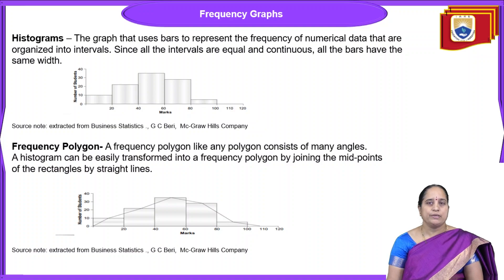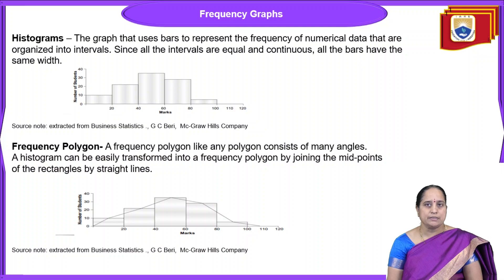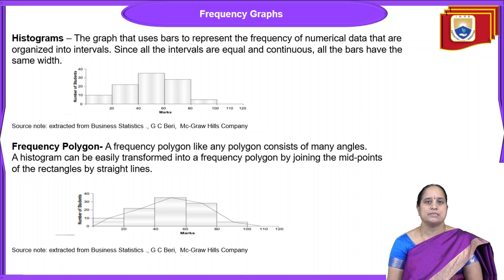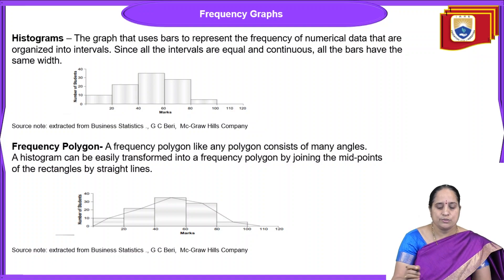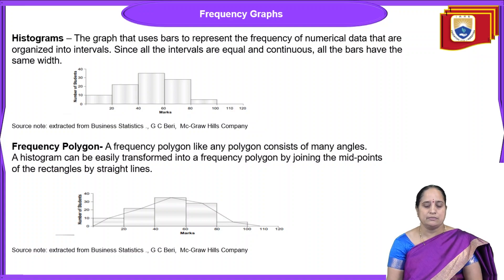The next types of graphs are frequency graphs, under which we have histograms, frequency polygons and frequency curves. A histogram uses bars to represent the frequency of numerical data organized into intervals such as 0–20, 20–40, 40–60, 60–80 and so on. Since all intervals are equal and continuous, all bars will have the same width. A frequency polygon, like any polygon, consists of many angles. A histogram can be easily transformed into a frequency polygon just by joining the midpoints of the rectangles by straight lines.